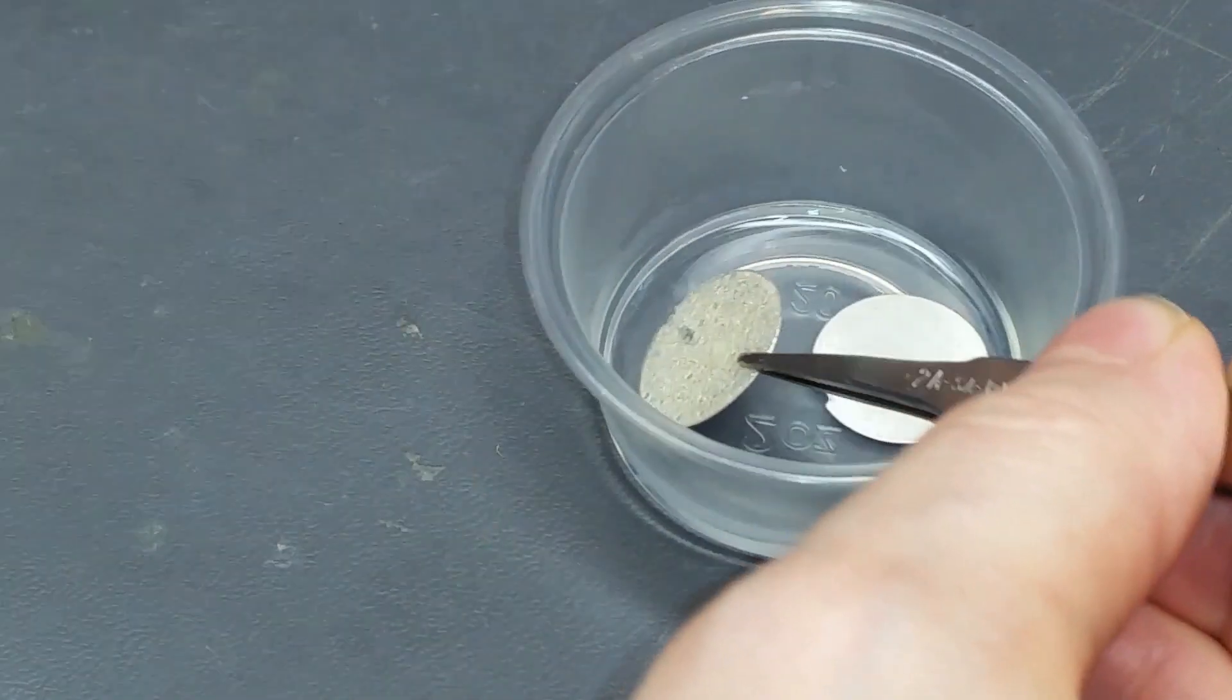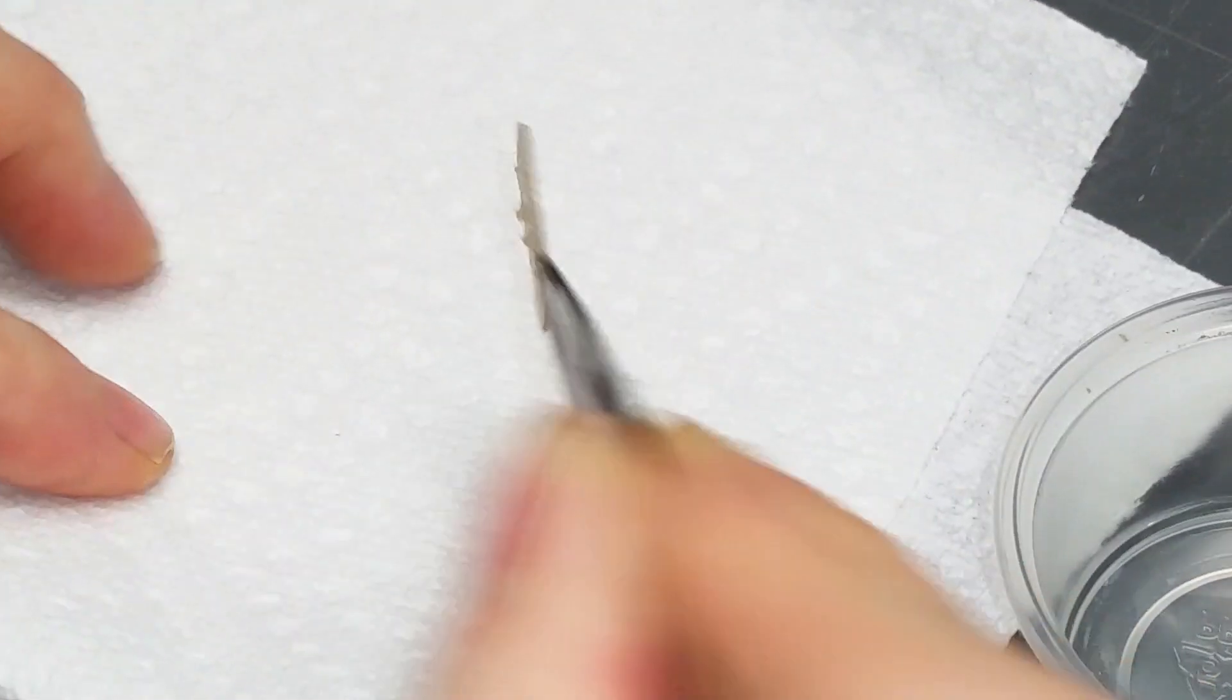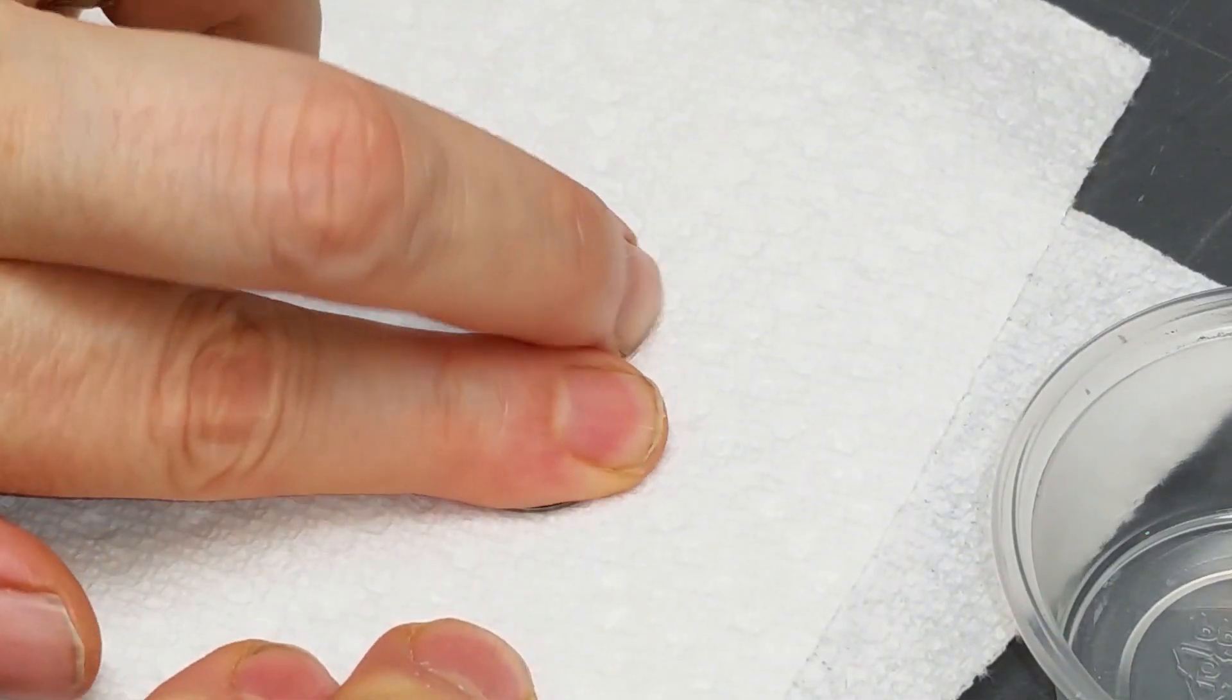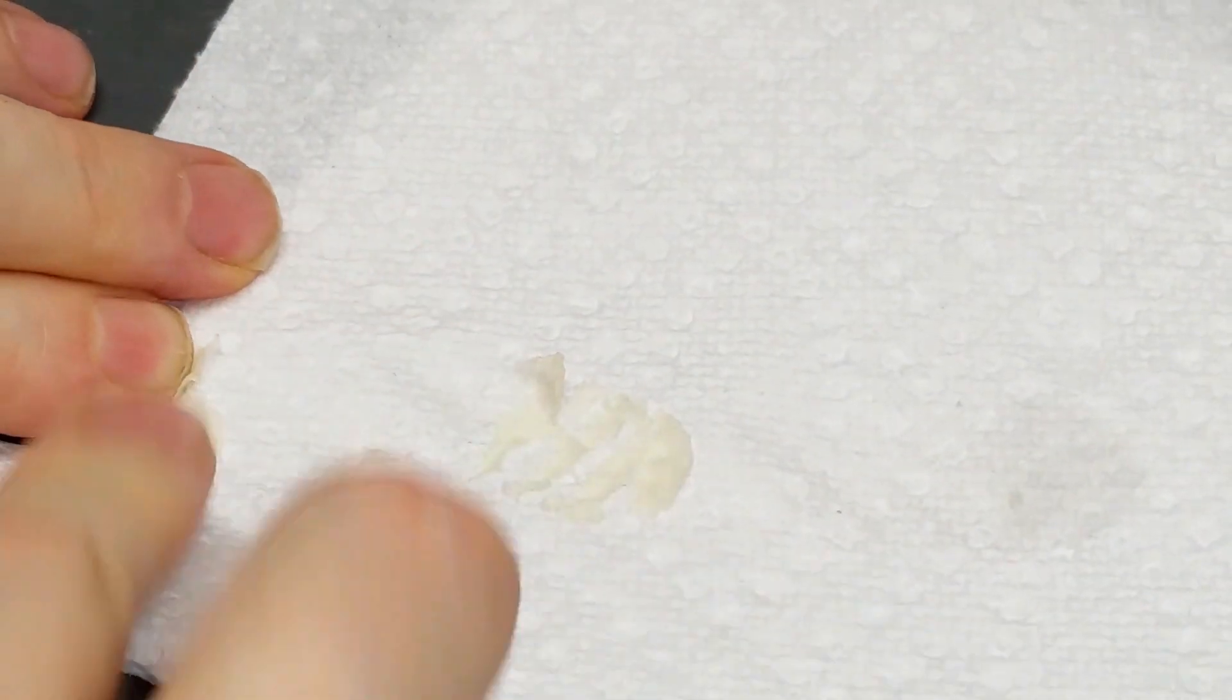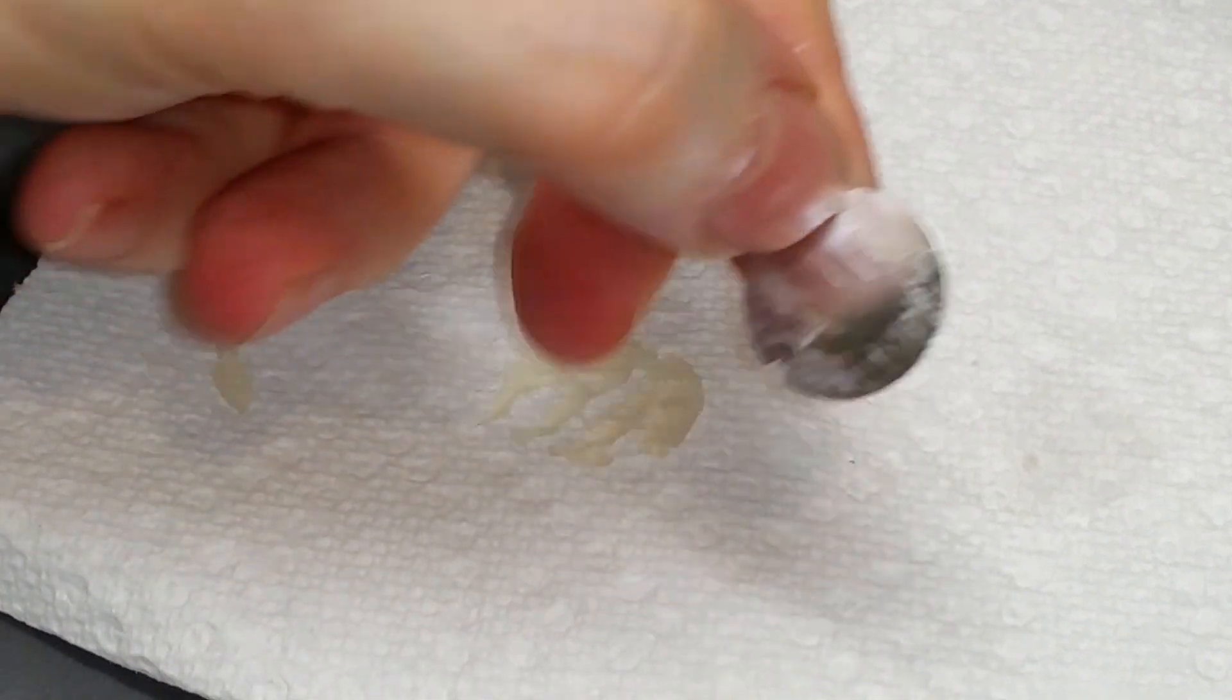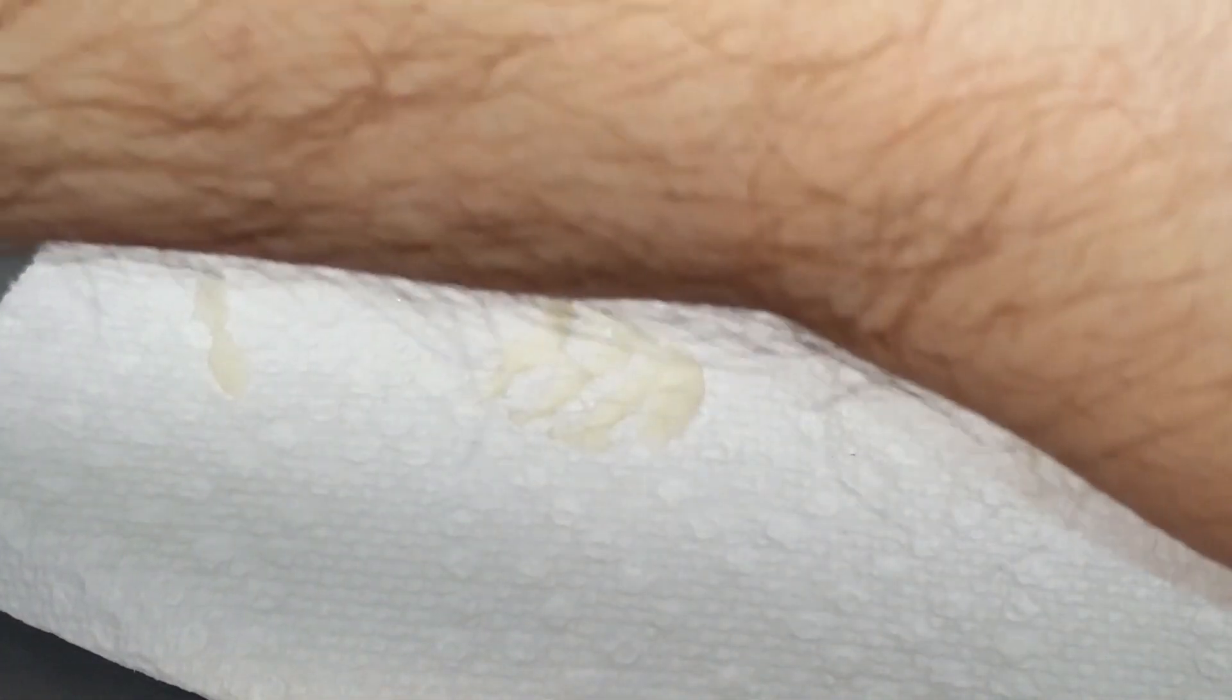I'm going to reach in and take out one of these and just put the adhesive down on a paper towel. As you can see, the old adhesive is kind of peeling off of it. It's still got a little bit in there. As you can see, there's still a little residue on there, so I'll put that back in there and we'll hit it again.